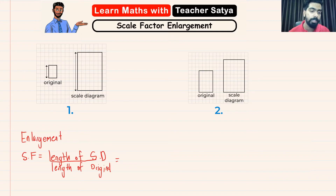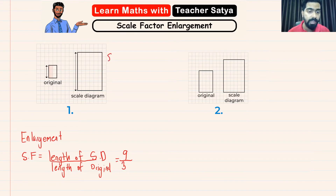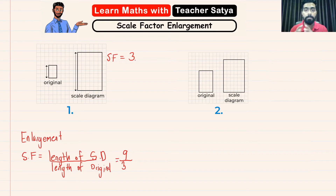Let's count how many boxes we have for the scale diagram's length: one, two, three, four, five, six, seven, eight, nine — so it is nine boxes. Over the original's length: one, two, three — which is three. Therefore the scale factor equals nine over three, which equals three. This means the scale diagram, the enlargement, has become three times bigger than its original picture.